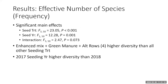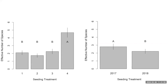For diversity measured by effective number of species using the frequency method, we saw significant main effects but no interaction. The enhanced mix with the green manure and alternate rows — treatment four — had higher diversity than all other seeding treatments. In figure form, you can see treatment four has higher diversity than all others, and the 2017 seeding year had higher diversity than 2018.